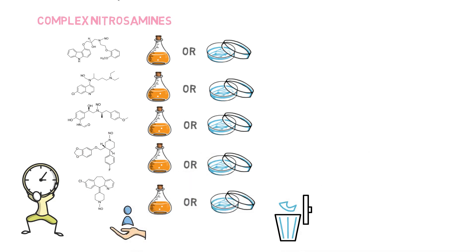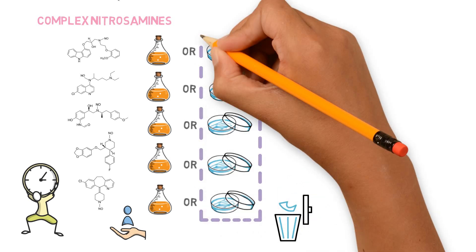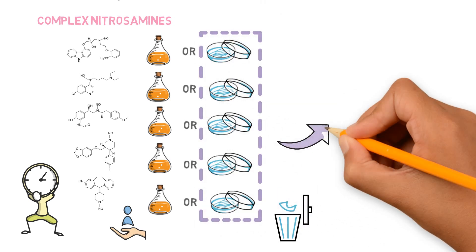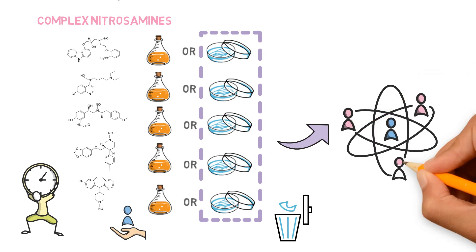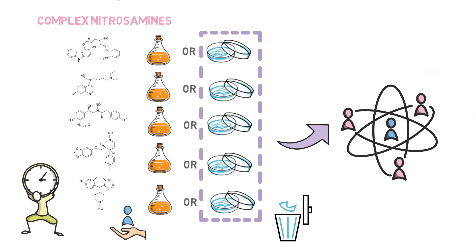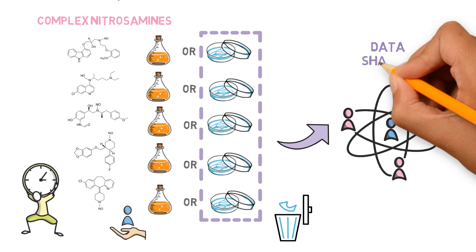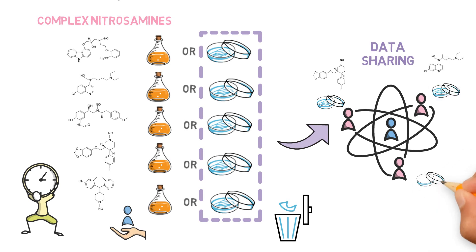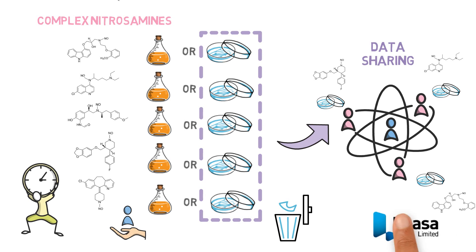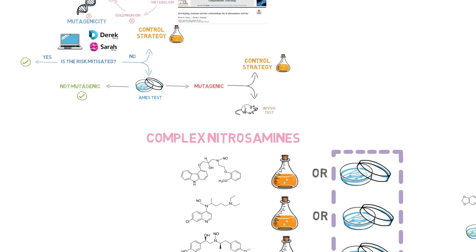What is the option then? If mutagenicity assessment is the path you take, there is a consortium which can help you avoid repeating AMES tests that others have already conducted, and this is through data sharing. If a company joins the consortium, it donates the data it already has and then gets access to AMES test results done by other companies for other nitrosamines. Hence, a scenario that initially seemed overwhelming can turn out to have a much more positive conclusion.